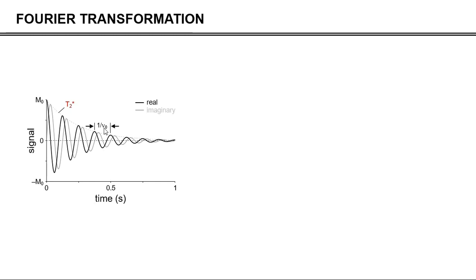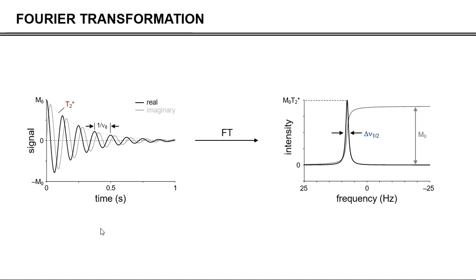Now, if we only have a single frequency in our FID signal, it is very easy to extract all these parameters. However, we will see later that NMR can have multiple frequencies in an FID, and then it will be very difficult to visually separate the signals. Fortunately, there is a very easy tool, which is called the Fourier transformation, that can convert the time domain signal into a frequency domain spectrum. And if you have multiple resonances — multiple signals — you can separate those signals based on their frequency in the spectrum. And we will talk about that in a future video as well.